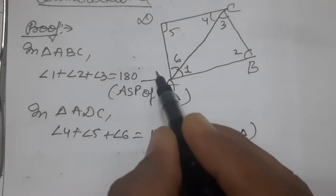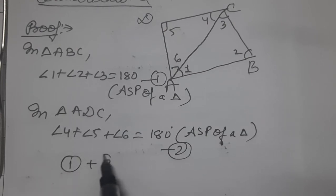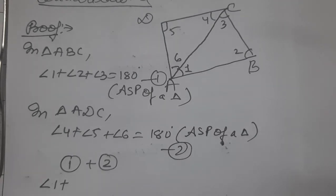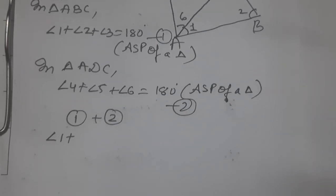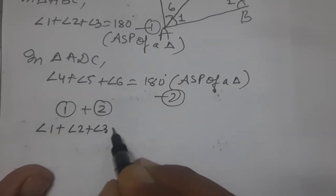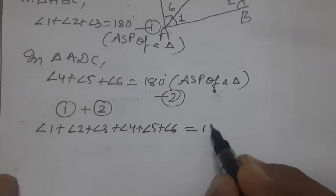Now add equation 1 and equation 2. We add left-hand side with left-hand side and right-hand side with right-hand side. So: angle 1 + angle 2 + angle 3 + angle 4 + angle 5 + angle 6 = 180 + 180. Now arrange: angles 1 and 6 together, angle 2 alone, angles 3 and 4 together, angle 5 alone, equals 360.